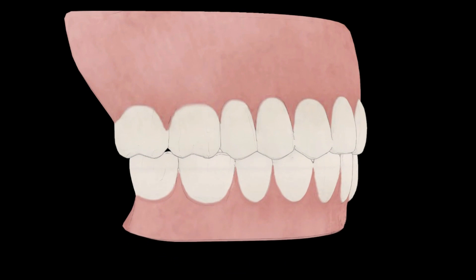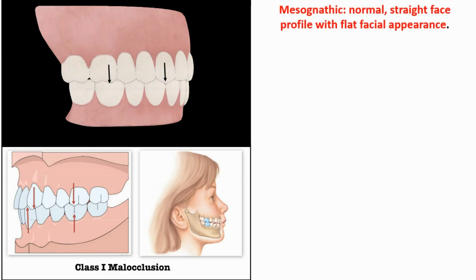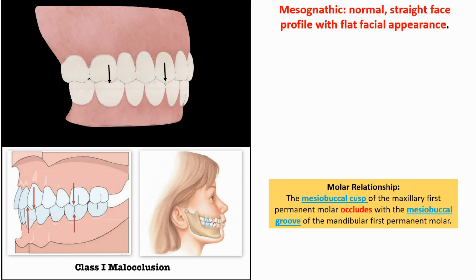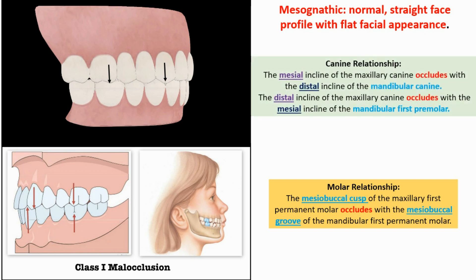The first type of occlusion is Angle Class 1. It is the normal occlusion, called neutro-occlusion, and characterized by a straight face profile with flat facial appearance. Molar relationship: the mesiobuccal cusp of the maxillary first permanent molar occludes with the mesiobuccal groove of the mandibular first permanent molar. Canine relationship: the mesial incline of the maxillary canine occludes with the distal incline of the mandibular canine, and the distal incline of the maxillary canine occludes with the mesial incline of the mandibular first premolar.